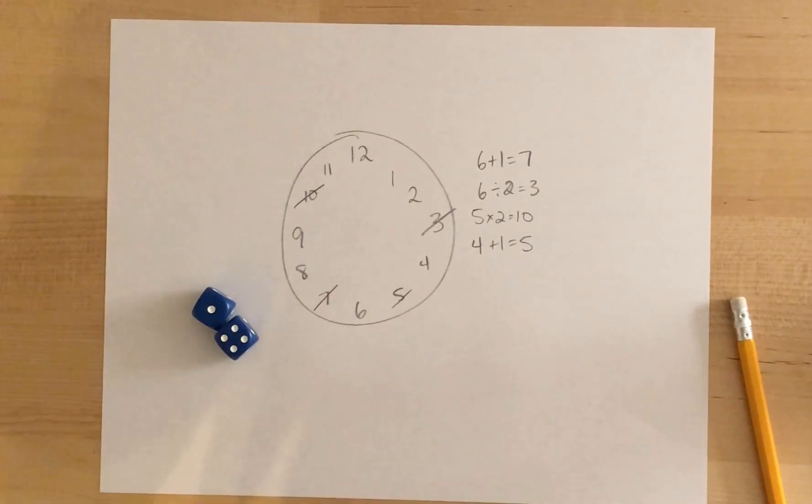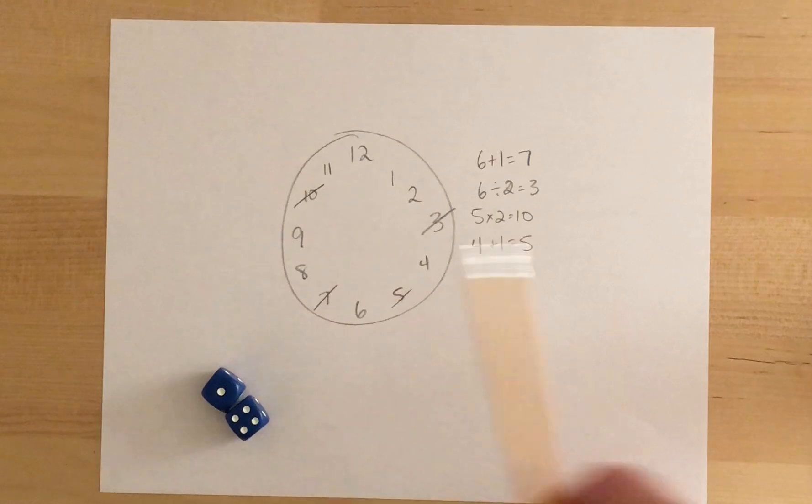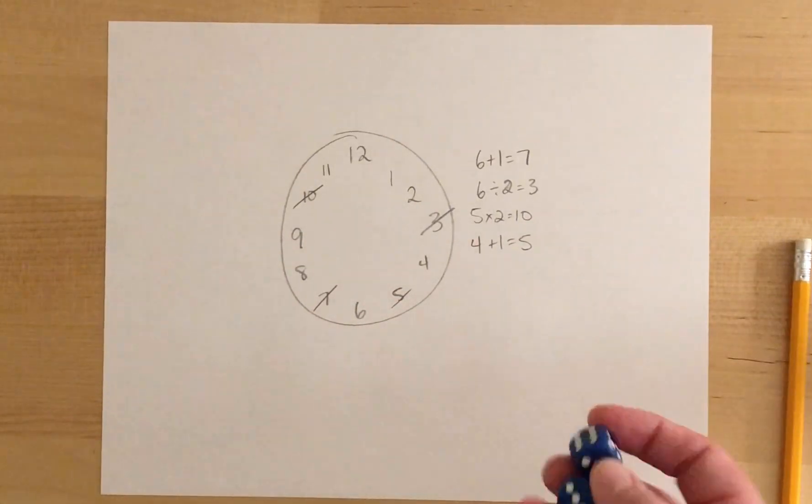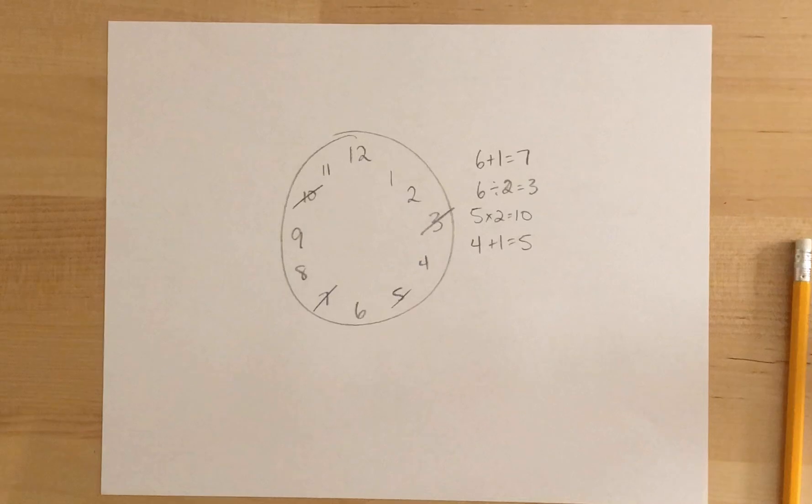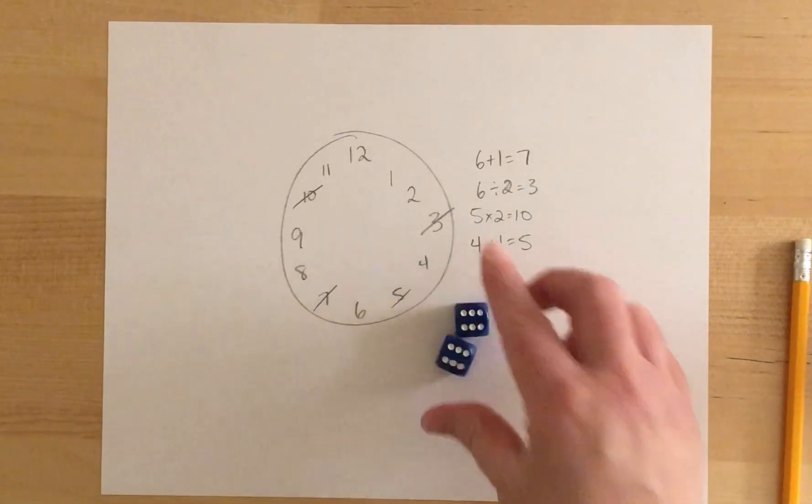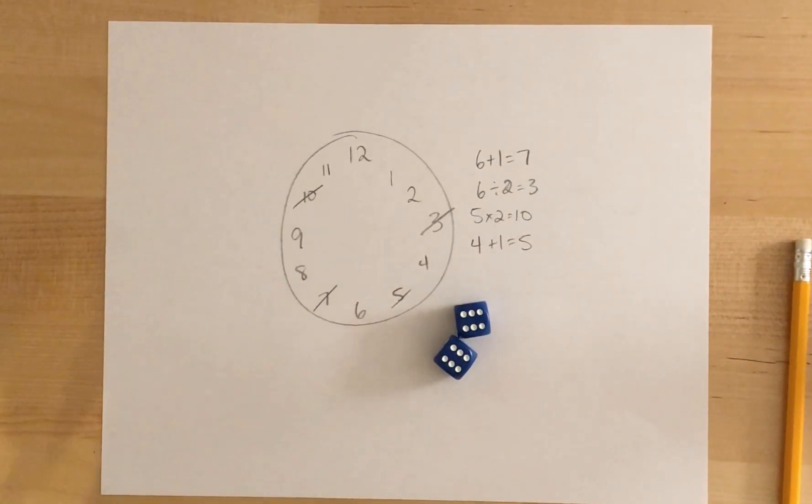Now to play this as a two-player game—it makes a really fun two-player game as well—you'd have two kids. They each draw their own clock, they each have their own dice, and they are just rolling and knocking off the numbers as fast as they can. Then the first one to knock off their entire clock is the winner.